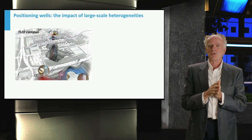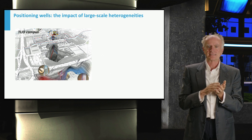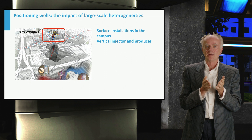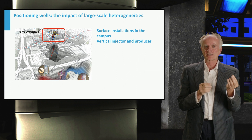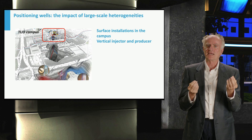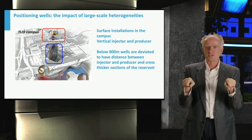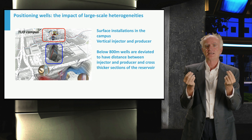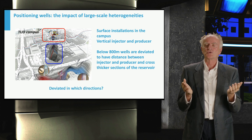We now look at how the reservoir-scale geology has influenced the design of the injector and producer wells. As is typically the case, the position of installation at the surface was dictated by the location of the user — that is, the campus of the university. To minimize impact and increase efficiency, the two wells start from the same plot where also heat exchange and re-injection facilities will be placed. From a depth of 800 meters, the two wells diverge and are drilled in a non-vertical position to let the injector and producer wells hit the reservoir at the appropriate distance and to increase the traversed thickness of the reservoir. Along which direction should the two wells be aligned — North-South or East-West?